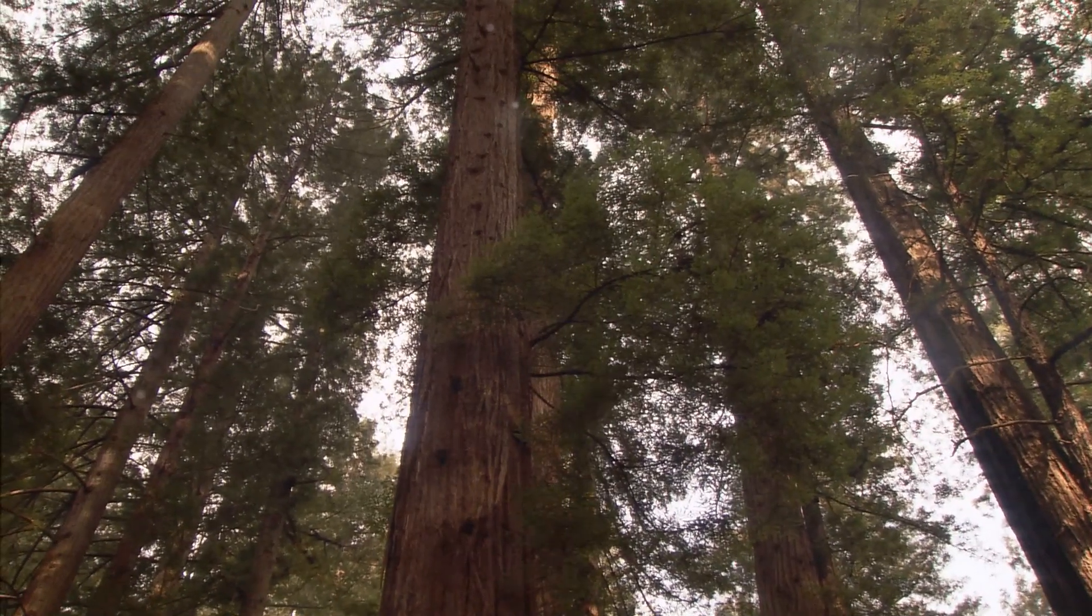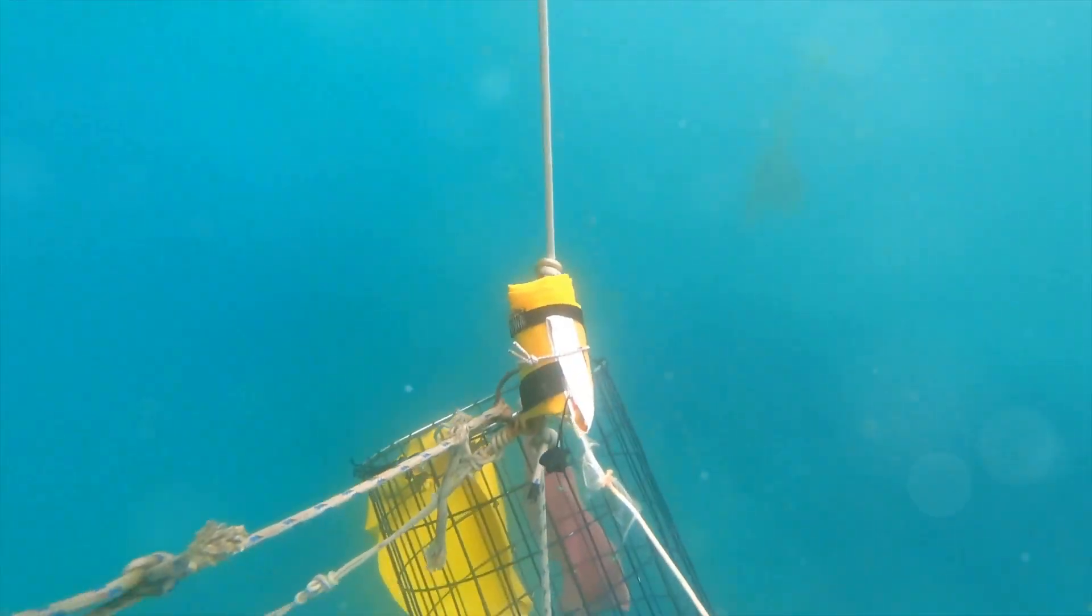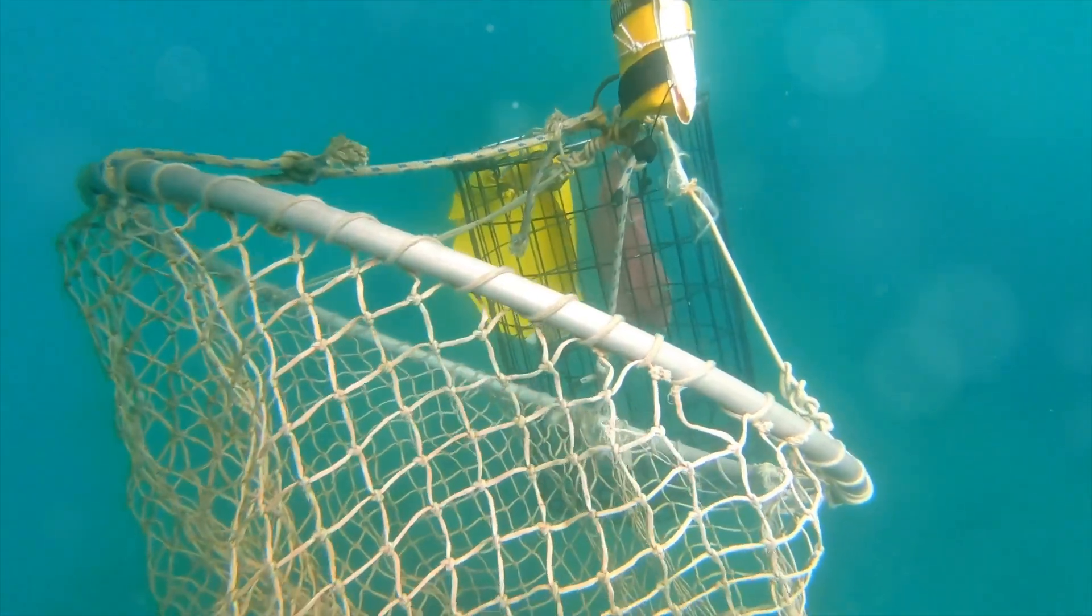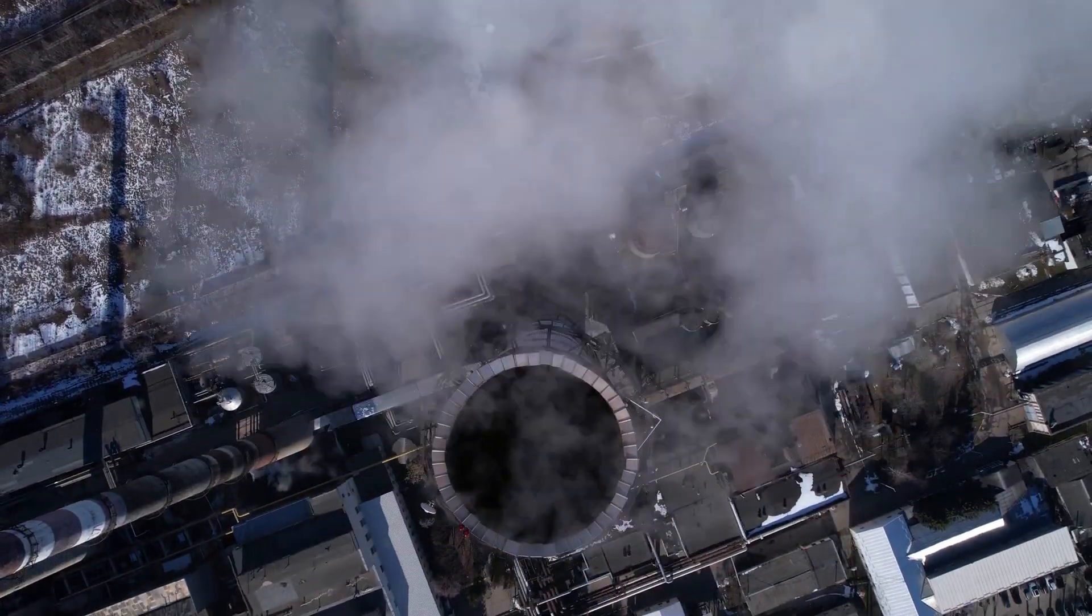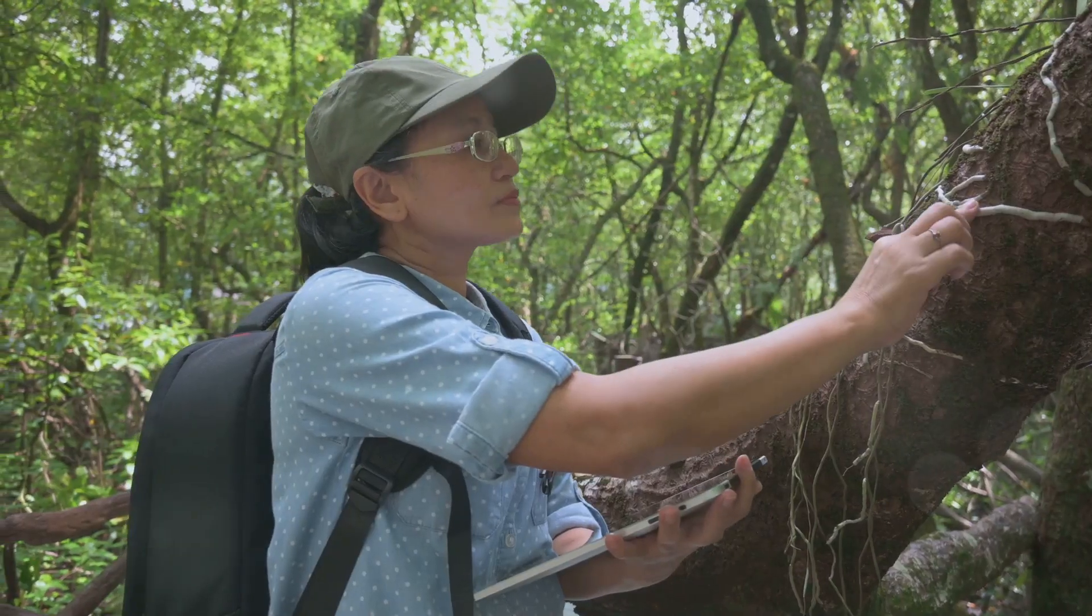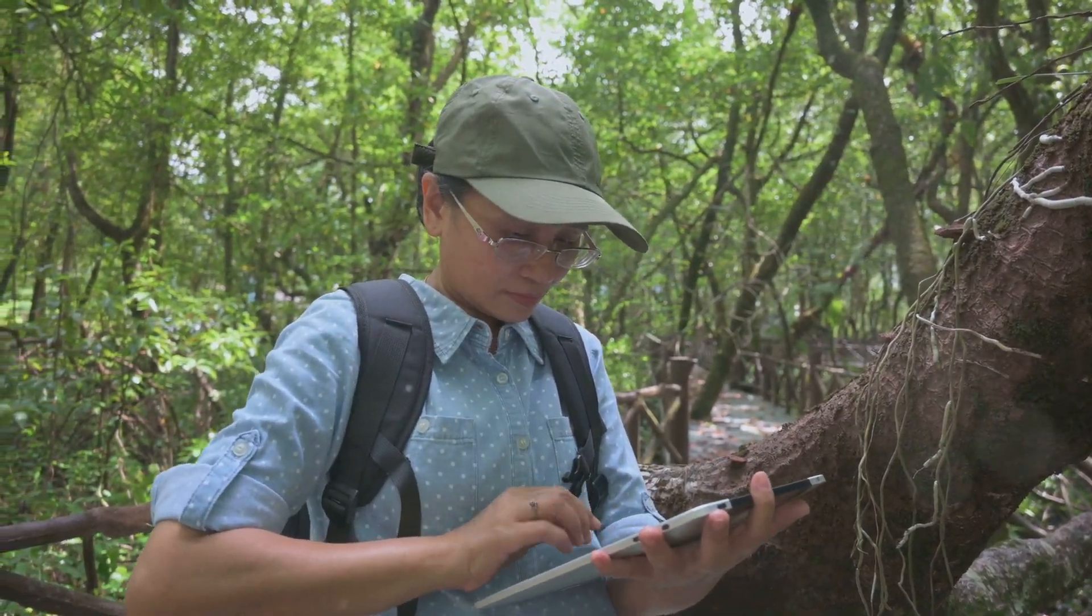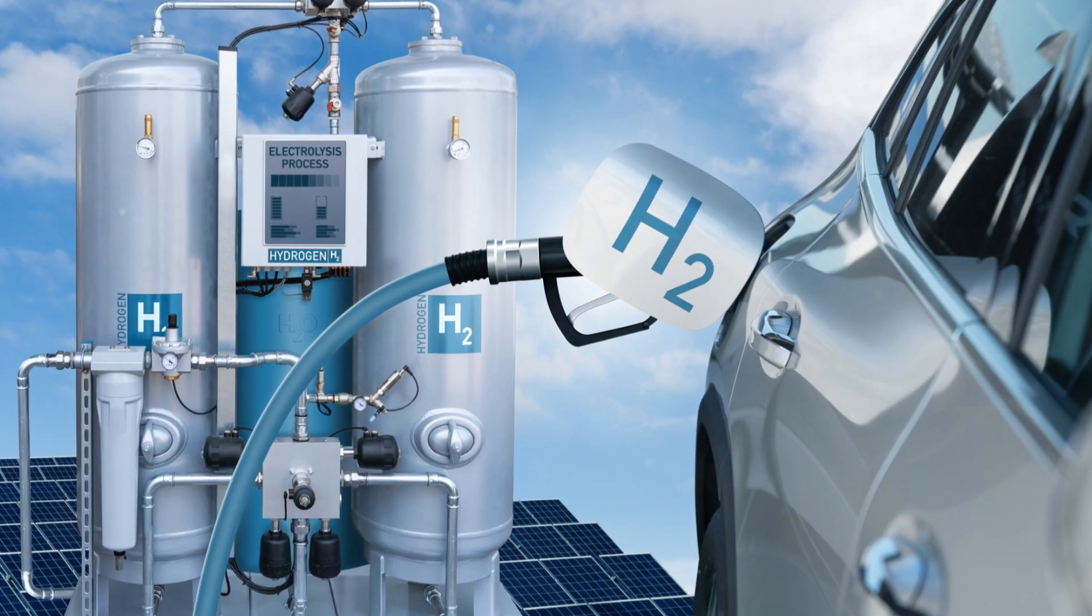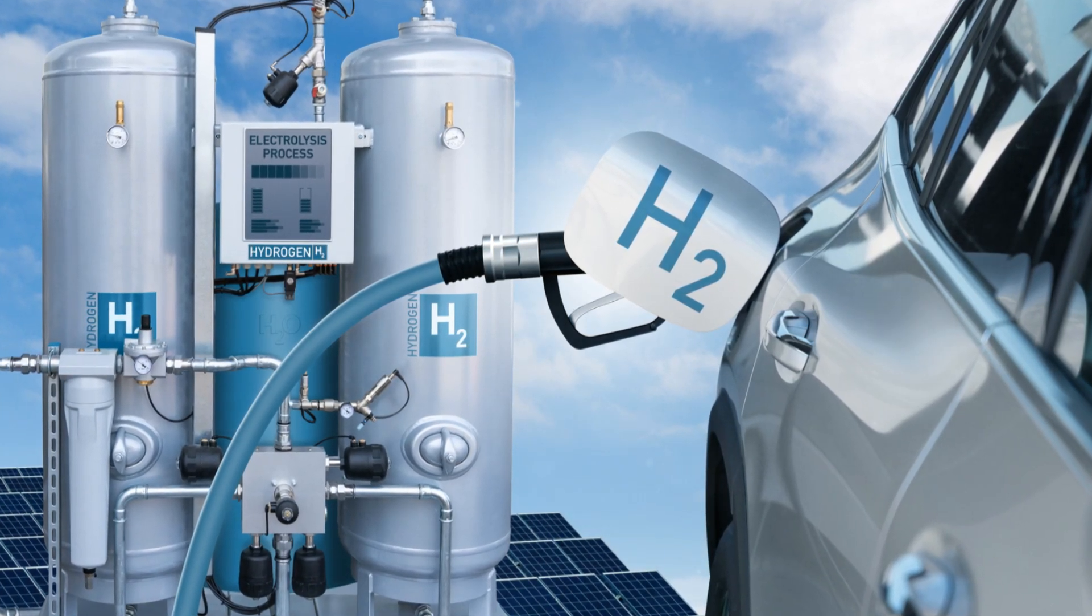Imagine a microfluidic fuel cell-powered sensor perched atop a towering redwood, monitoring air quality and transmitting data back to researchers in real time. Or picture a similar sensor submerged in the ocean depths, tracking ocean currents and salinity levels to help us understand climate change. By providing a continuous and localized source of energy, microfluidic fuel cells are enabling scientists to gather crucial environmental data that was previously out of reach. It's a testament to how these tiny powerhouses are helping us better understand and protect our planet.